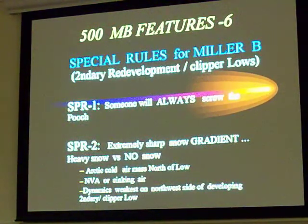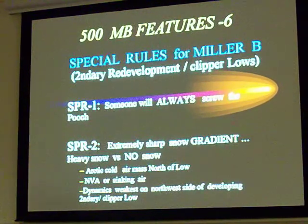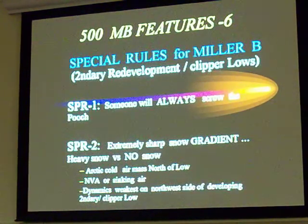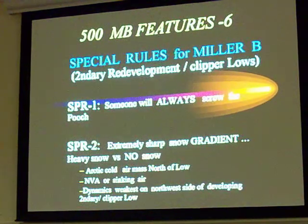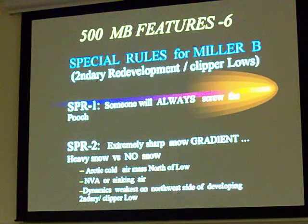500 millibar features. Special rules for Miller-B's. Special rule number one: someone's always going to screw the pooch — you're always going to get in trouble with Miller-B systems. Someone's always going to say, 'I can't believe you're 25 miles away from me, you've got 9 inches, I've got 1.' It always happens. December 2000, February 69, February 78 — numerous examples of Miller-B systems. December 1960: amazing snow gradients, and then it just ends right there.